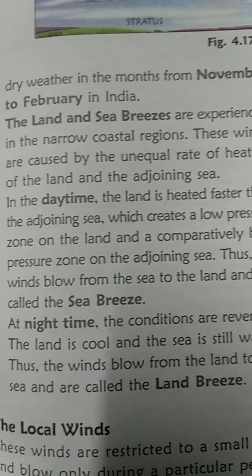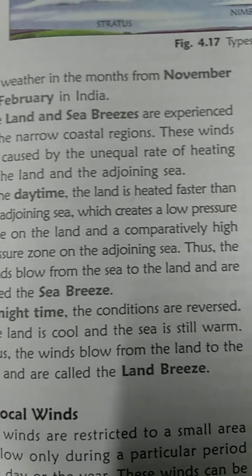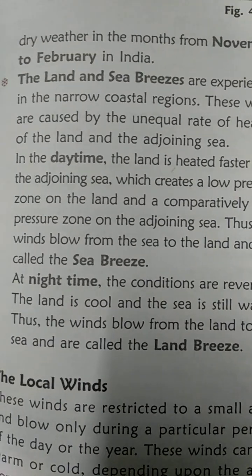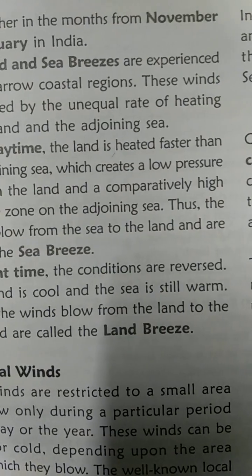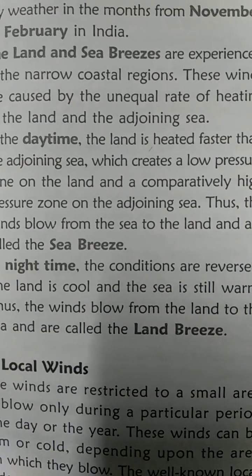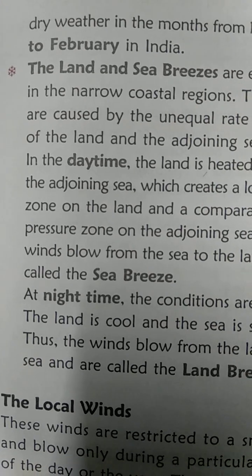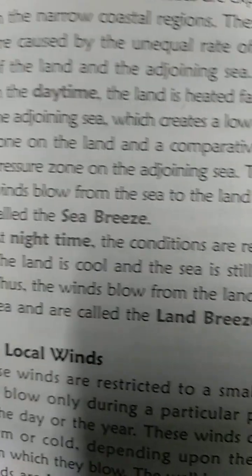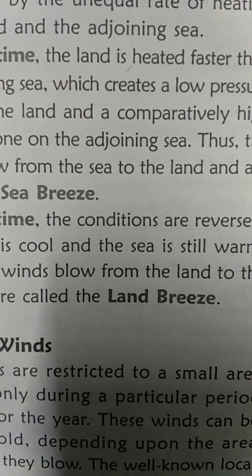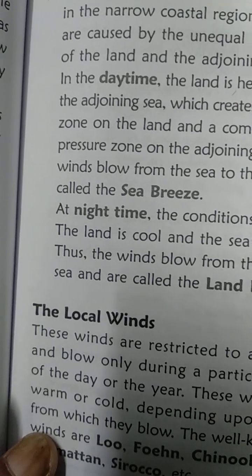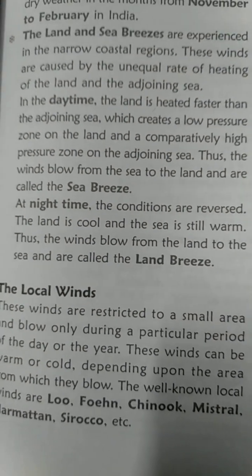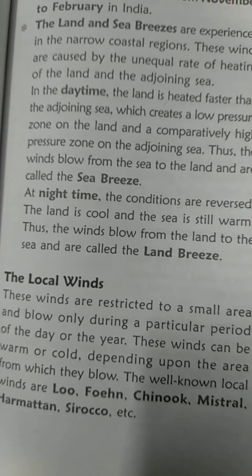Land and sea breezes are experienced in narrow coastal regions. These winds are caused by the unequal rate of heating of the land and the sea. In the daytime, the land heats up faster than the sea, creating a low pressure zone on the land and a high pressure zone over the sea — so the wind blows from the sea to the land, known as sea breeze. At night, the wind blows from the land towards the sea and is known as land breeze, because it originates from the land. Thank you.